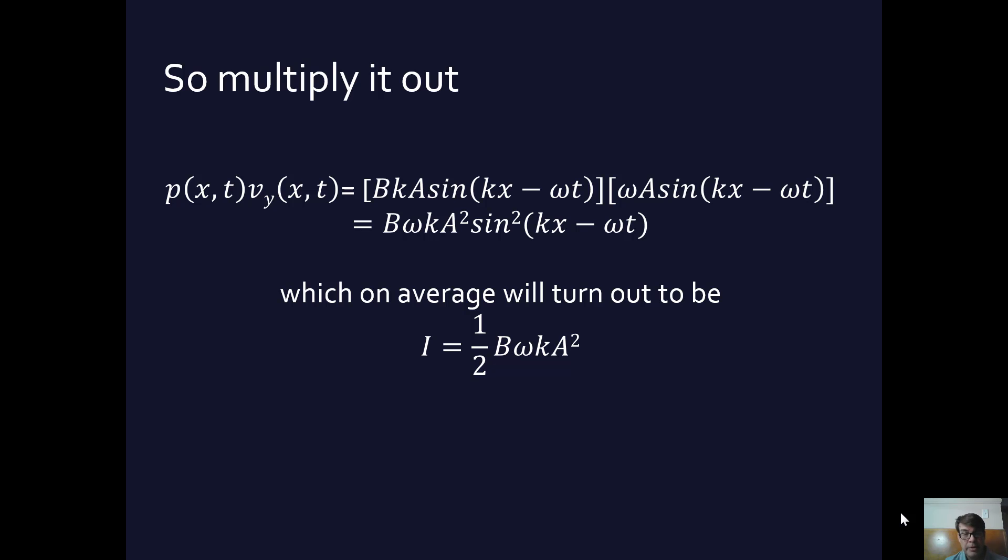The intensity equals 1 half the bulk modulus omega k amplitude squared. Okay. So this can be rearranged using some of the formulas that we've been using. Omega equals velocity times k, and the velocity squared equals the bulk modulus over the density. And so we end up with this equation. Again, not very elegant, but using a little algebra, the intensity equals 1 half the square root of ρB times omega squared amplitude squared.